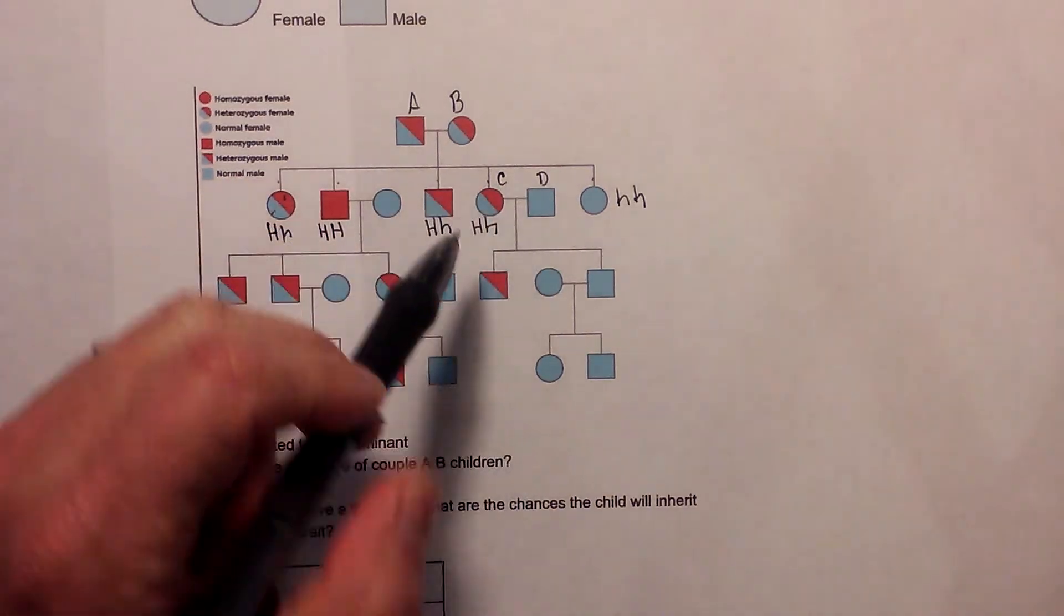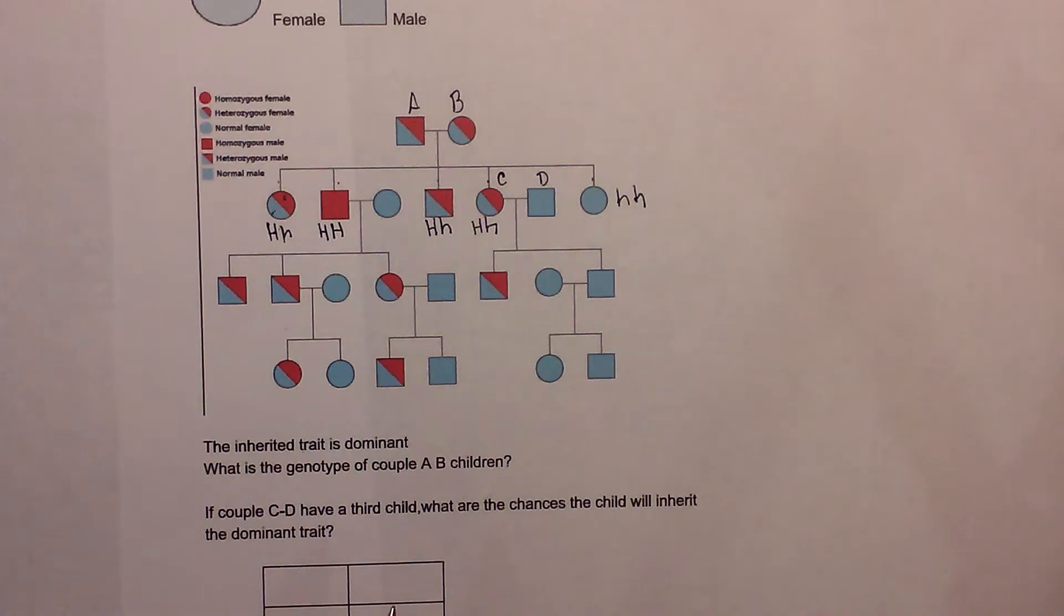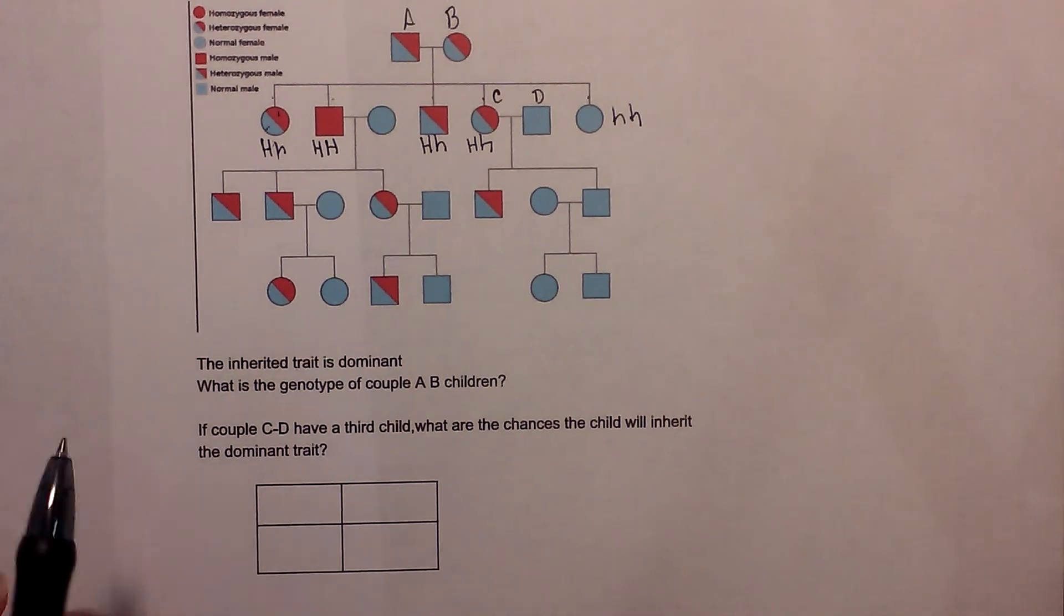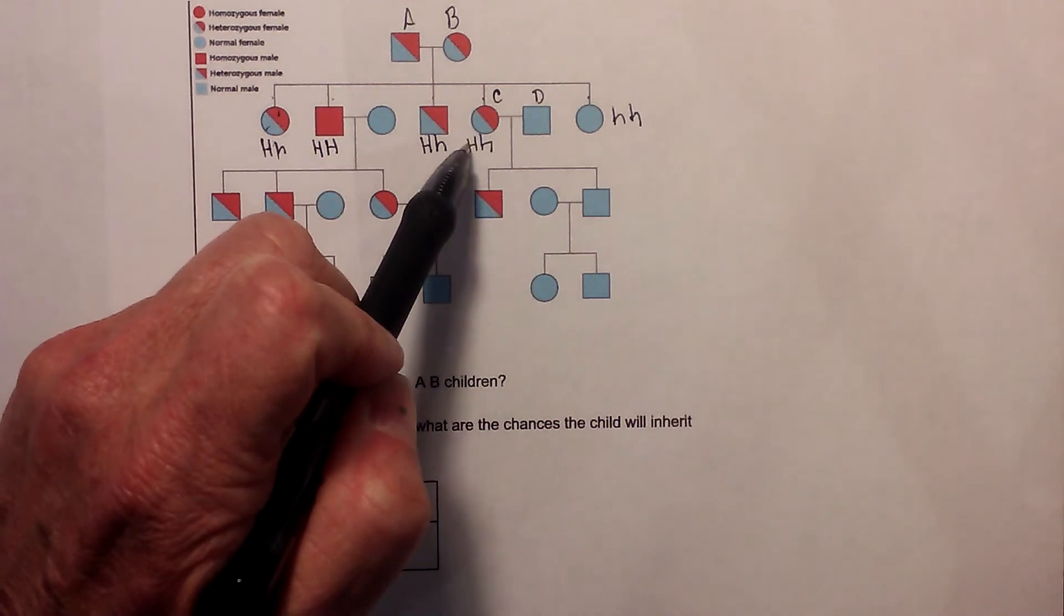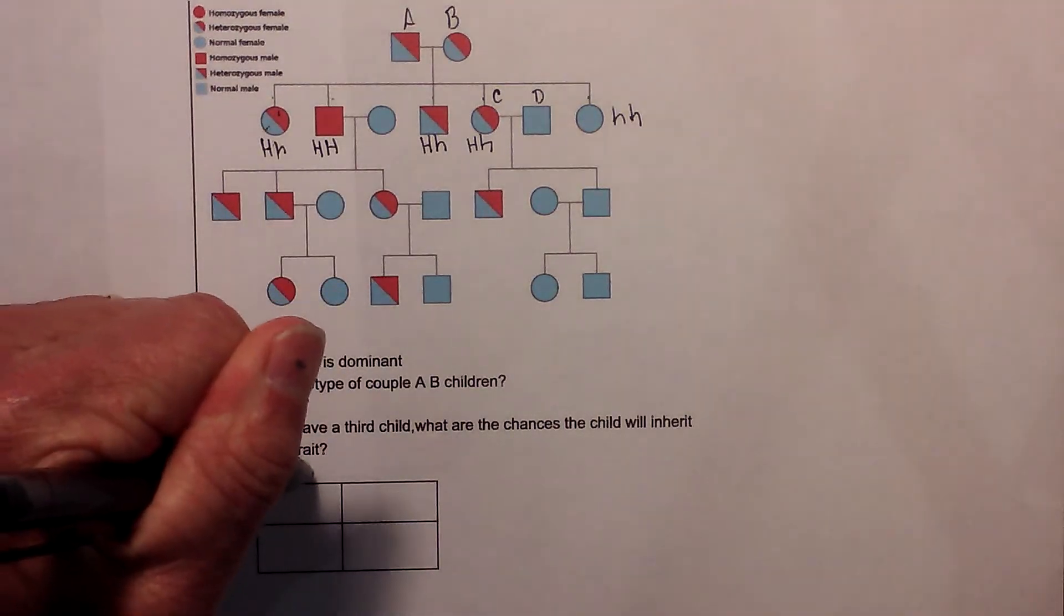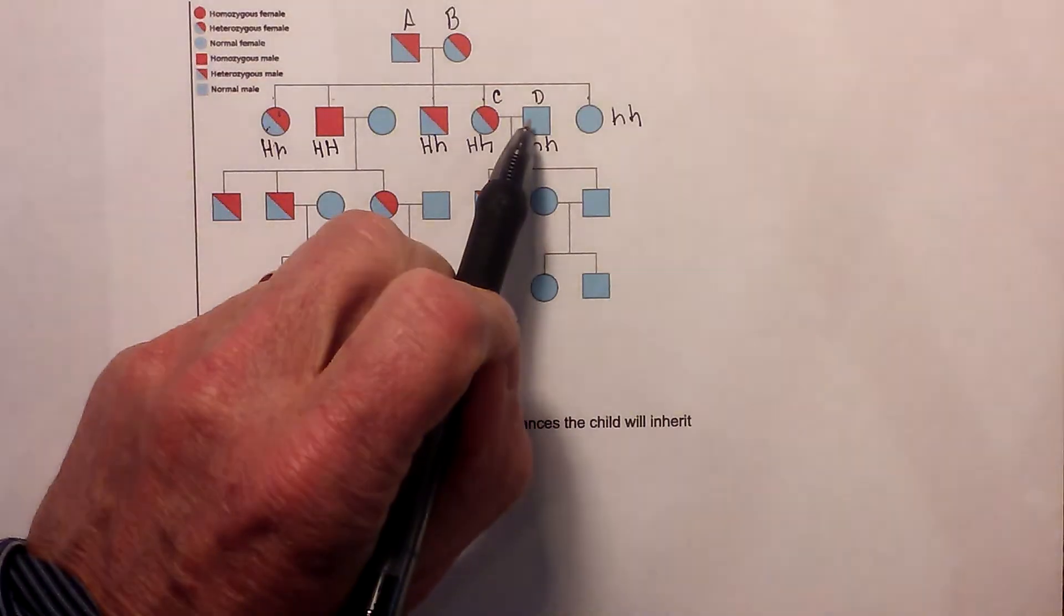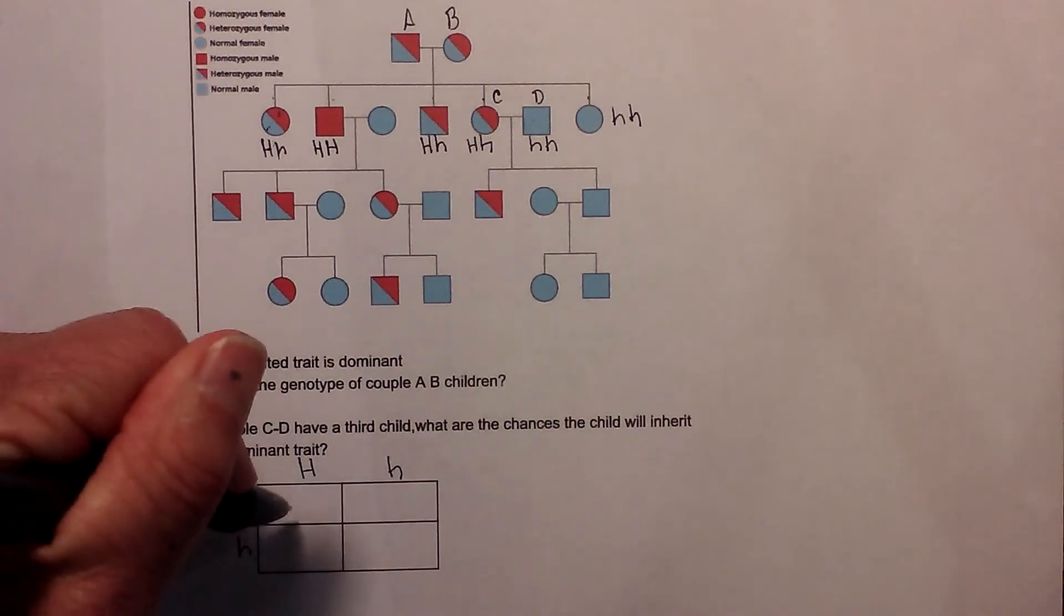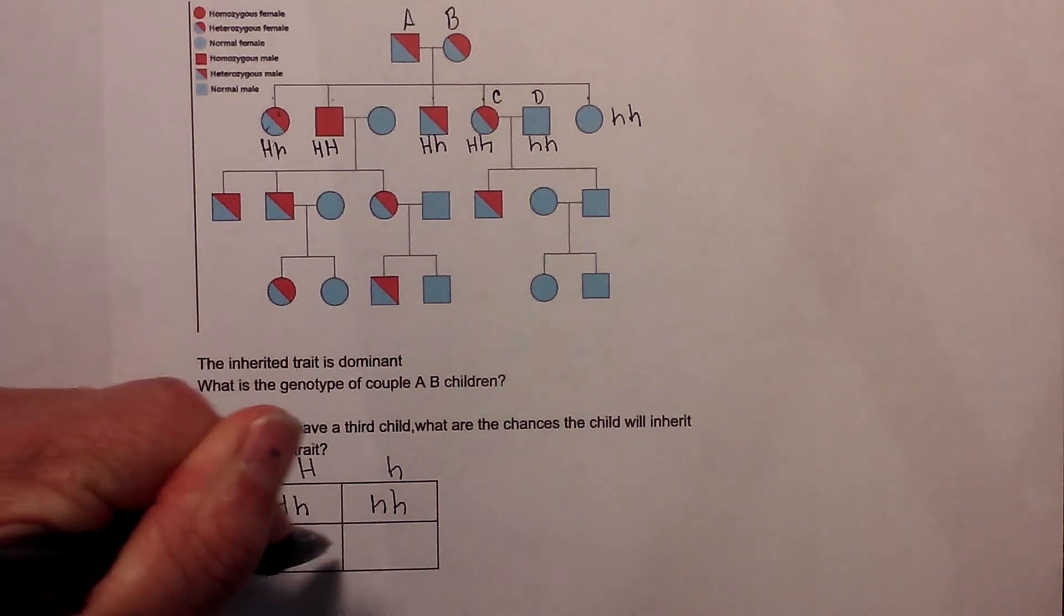Next, if couple CD decides to have a third child - right now they have two children, decide to have a third child - what are the chances the child will inherit the dominant trait? So in order to solve that you can go ahead and set up a Punnett square and see what the Punnett square tells you. So first let's go ahead and look at the female, and the female of CD is heterozygous. The female here heterozygous. And the male must be homozygous recessive because he is normal, did not inherit the dominant trait. And so now I will fill in the boxes like you do with a Punnett square.